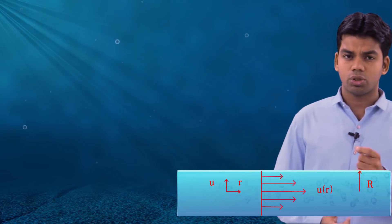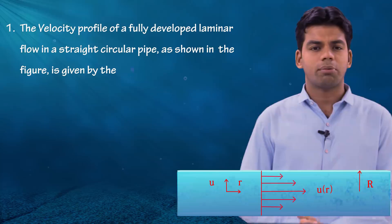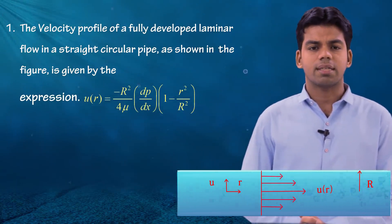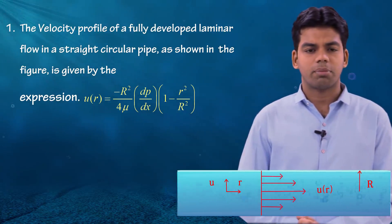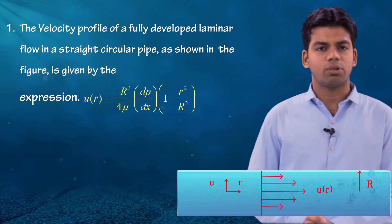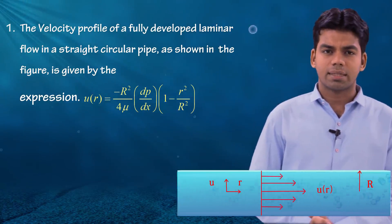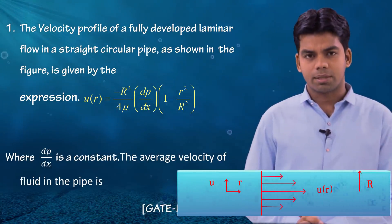We will take one question which was asked in GATE 2009. I will first show the conventional method and then discuss the shortcut trick. The question says: the velocity profile of a fully developed laminar flow in a straight circular pipe is given by u(r) = −(R²/4μ)(dp/dx)(1 − r²/R²), where dp/dx is a constant. We have to find the average velocity of the fluid in the pipe.